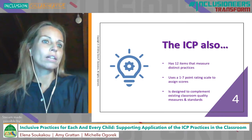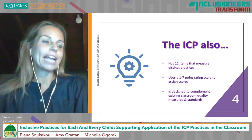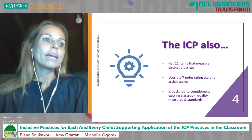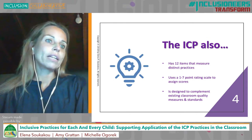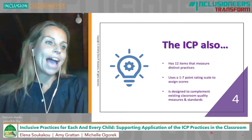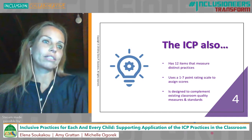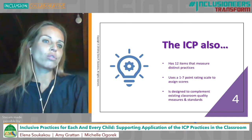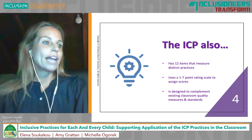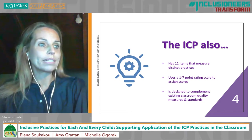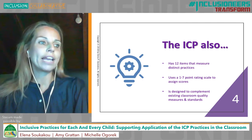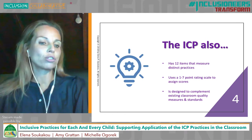Ratings range from 1, involving practices considered highly inadequate for promoting children's engagement in the group and meeting their individual needs, to a rating of 7 indicating practices that promote the highest degree of children's active participation including individualized strategies and accommodations. The ICP tool is designed to complement existing program quality assessment measures and standards by focusing on everyday inclusive practices at the classroom level.